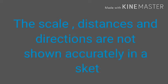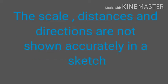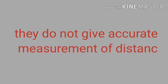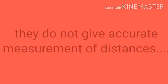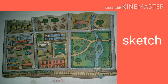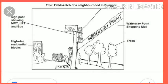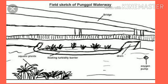The scale, distance, and directions are not shown accurately in a sketch. Sketches do not have scales and do not have accurate measurements of distances. For example, suppose you want to visit a friend but you don't know the way to the house — your friend makes a rough drawing to show you the way. This rough drawing is a sketch.